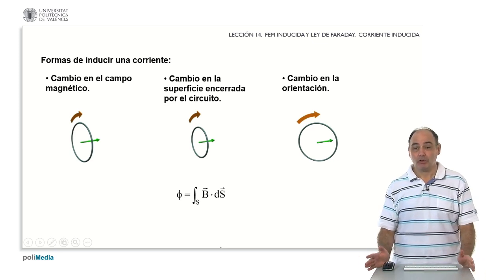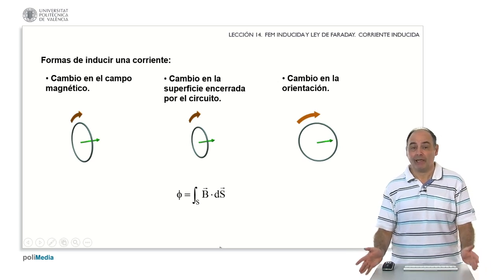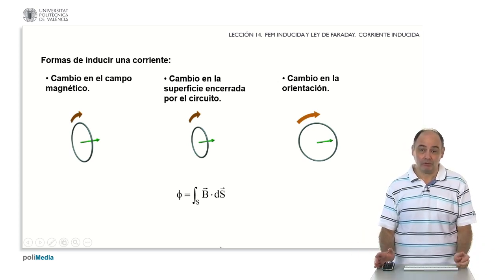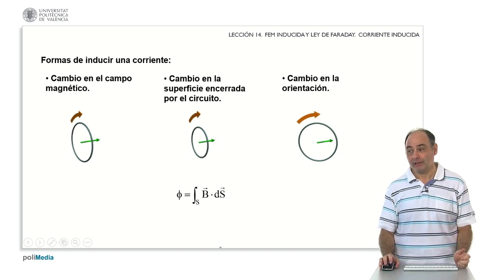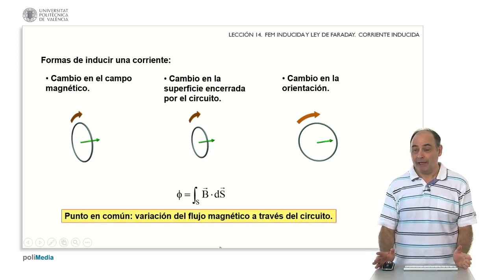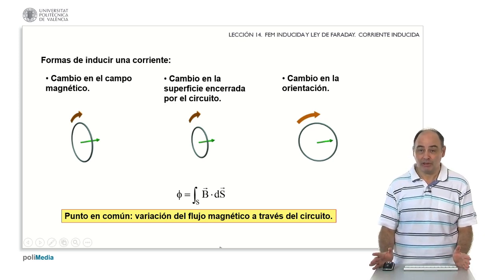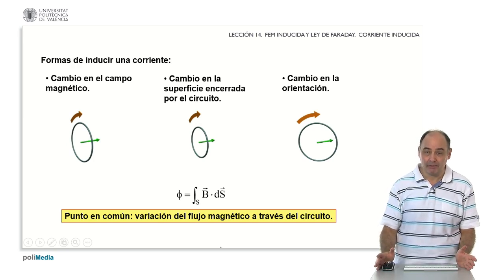I'm talking about three separate cases, but they can occur together, meaning we can have a situation where the field changes, the orientation changes, and the circuit changes, all simultaneously. So what we care about is how that magnetic flux changes over time. That is the common point — that is a variation. I cannot stress this enough. It is important that there is variation. If the magnetic flux is constant, we don't have anything; we do need for that flux to be changing.